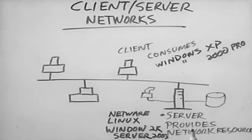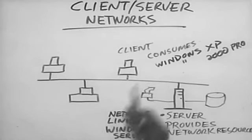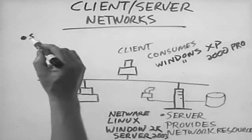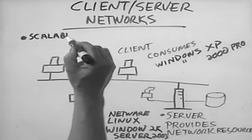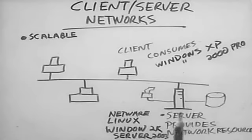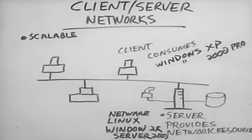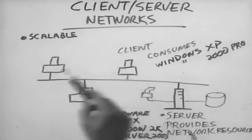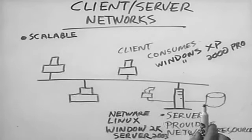These operating systems are designed to provide network resources. The benefits of this type of network include, first of all, that it's very highly scalable — it's easy to expand the size of the network, easy to add more clients, easy to add more servers. Client-server networks are also much easier to support because services are centralized. If folks are having a problem accessing files, you know where to look — it's on the server. Backup is also a lot easier, since users save their data on the server's storage system.